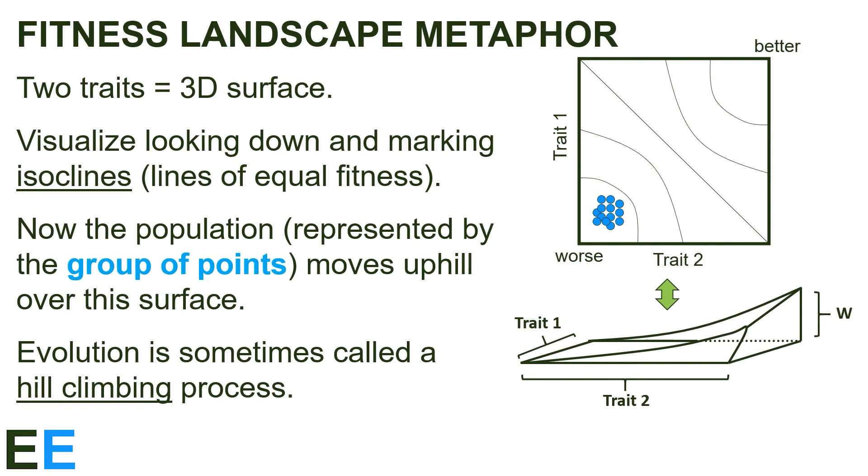Instead of just considering a single phenotypic or genotypic trait, fitness landscapes are usually used for more than one trait. If we consider two traits, then we get a three-dimensional fitness surface laying above the two axes.